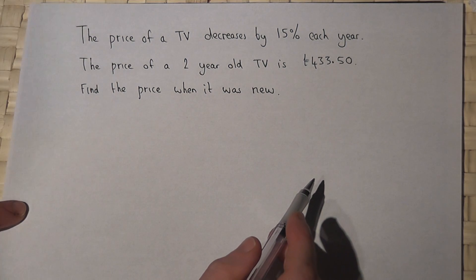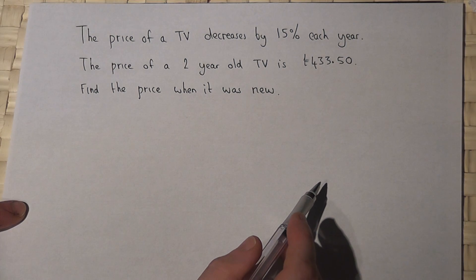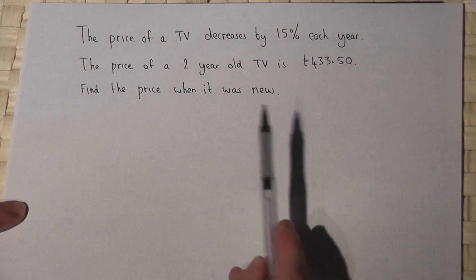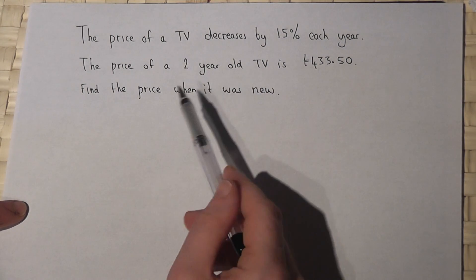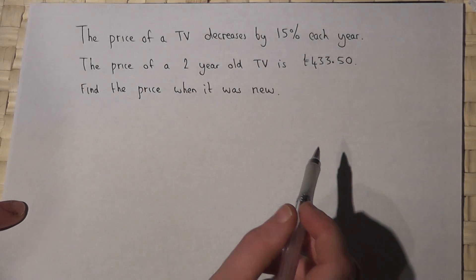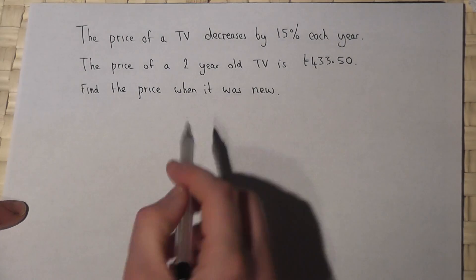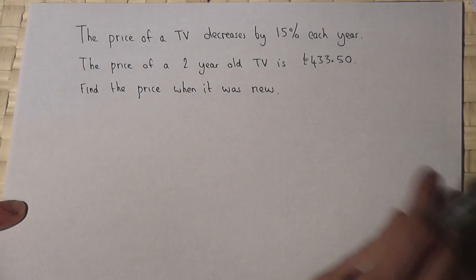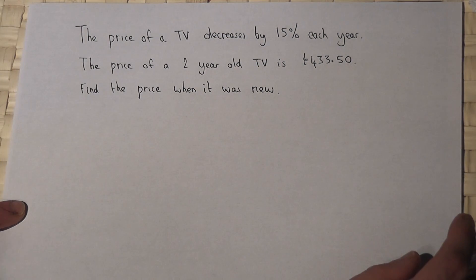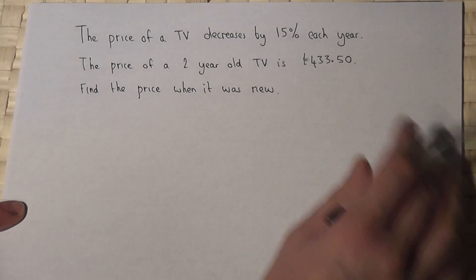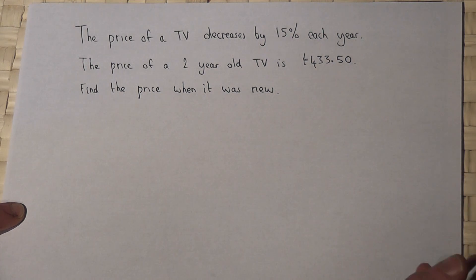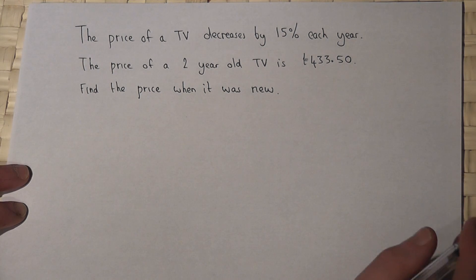This video looks at a process called reverse percentages. We're told that the price of a TV goes down by 15% each year, and after two years a TV is now worth £433.50. The question is asking: what was the price when it was new?